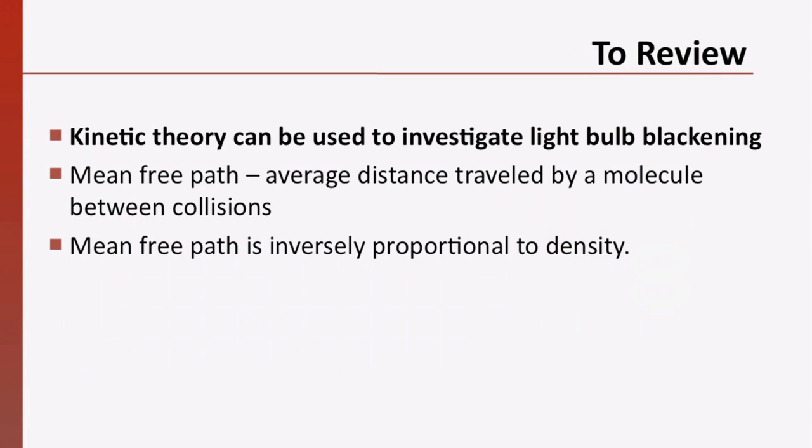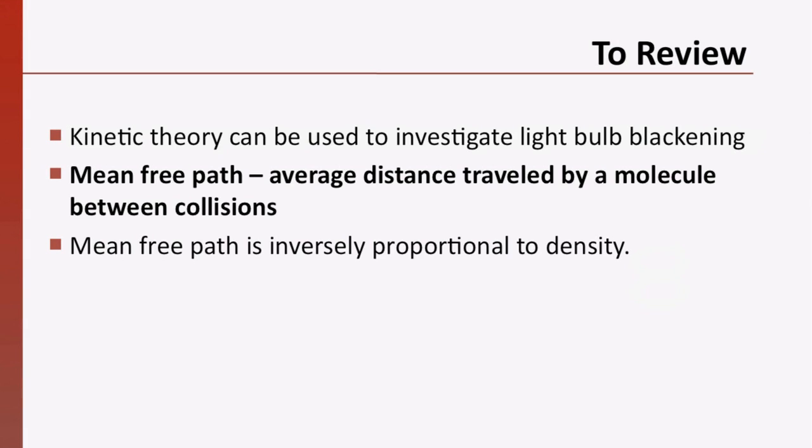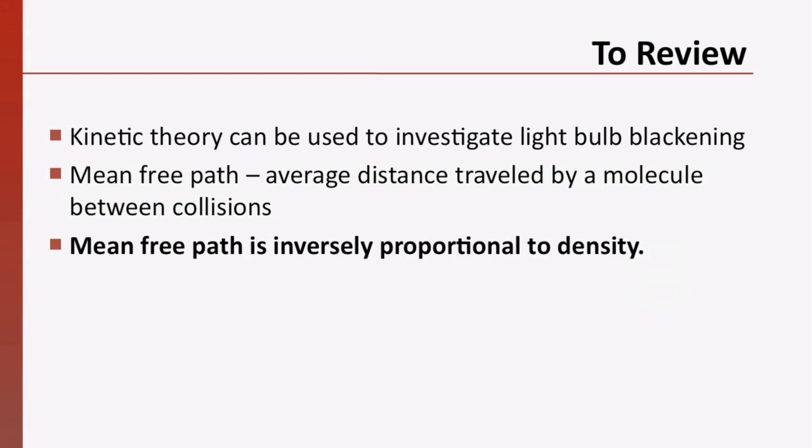To review, we saw how kinetic theory can be used to help us analyze a real-world problem, that of light bulb blackening. We derived an equation to allow us to estimate a gas molecule's mean free path. The mean free path provides an estimate of the average distance traveled by a molecule between collisions. We saw that the mean free path is inversely proportional to the density of gas molecules. Realizing that the mean free path of tungsten atoms in a light bulb was too long helped us think about what parameters we might manipulate in order to solve our problem. I hope this explanation has been helpful. Thank you.